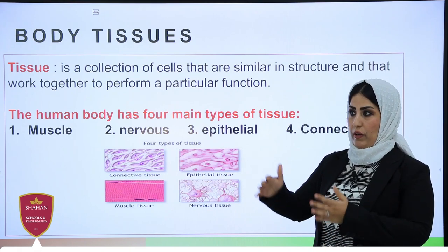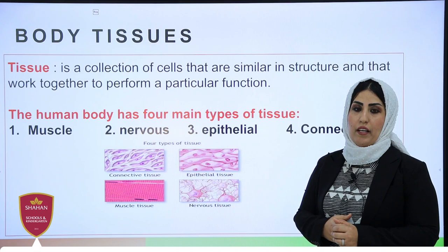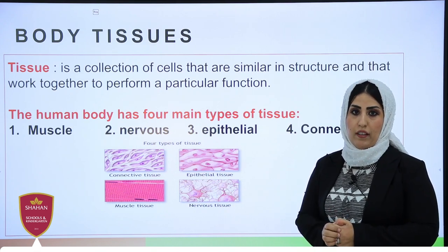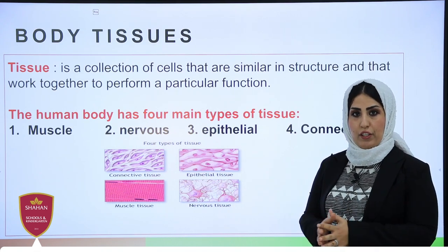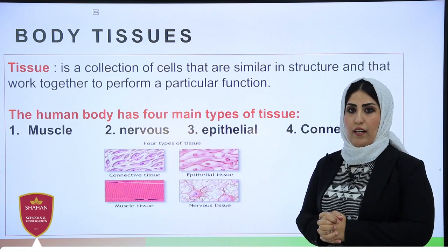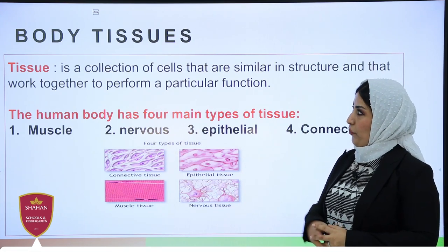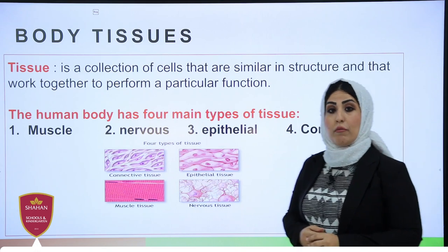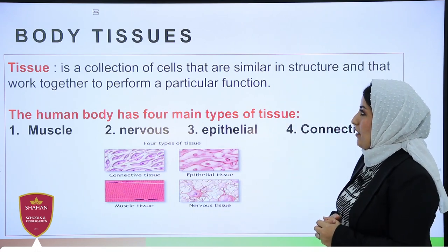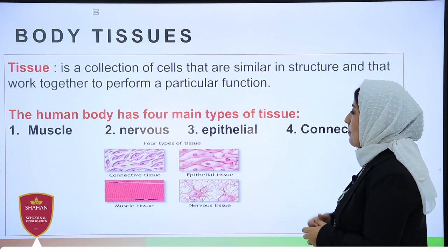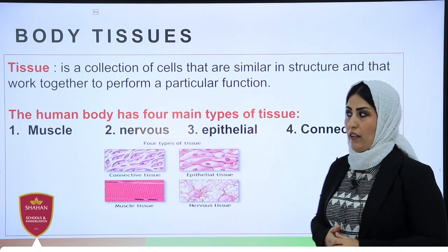But before we talk about these two systems, we need to talk about some important human body parts which have the greatest impact in creating and functioning the skeletal and muscular system. We need to know about the body tissues. What do you mean by tissue? Tissue is a collection of cells that are similar in structure and they work together to perform a specific function.